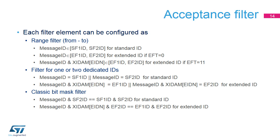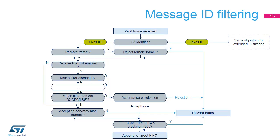To filter for one specific message ID, the filter element has to be configured with SF1ID equals SF2ID and EF1ID equals EF2ID. This algorithm describes the filtering sequence of frames received with a standard ID. A similar algorithm is used to handle frames received with an extended ID; however, the configuration of these two algorithms is done independently.